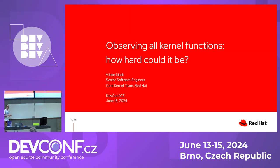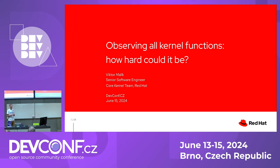Thanks for staying here so long for the last talk of the event, except for the wrap-up talk. My name is Victor, I'm a kernel engineer at Red Hat and I'm working mostly in kernel tracing or observability. I'd like to talk about something I've tried to do a while ago — what happens if I tried to observe all the kernel functions at once — and today I'd like to share the results of my observations and maybe teach you something new.